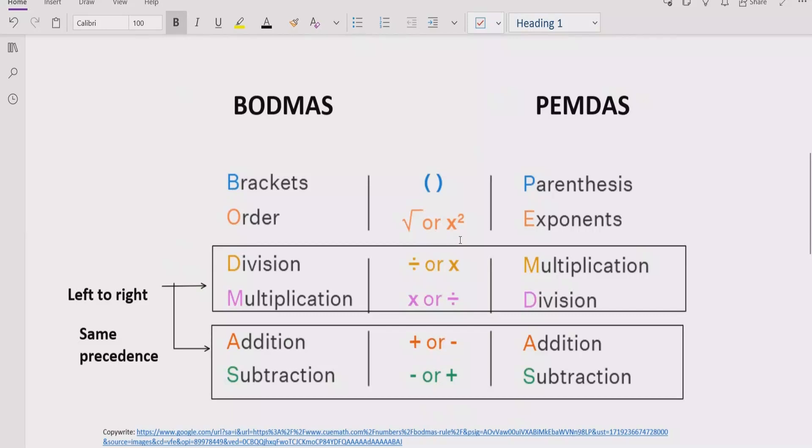The rule says if your expression contains any brackets or parentheses, you have to solve that part first in your expression. After the bracket, you have to see the exponent or power of any number. If your expression contains any number which has a power, you have to solve that part after the bracket.